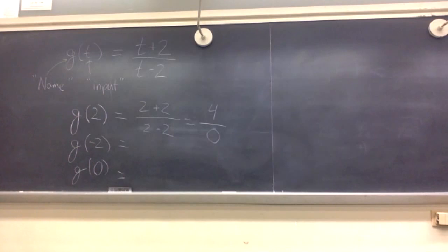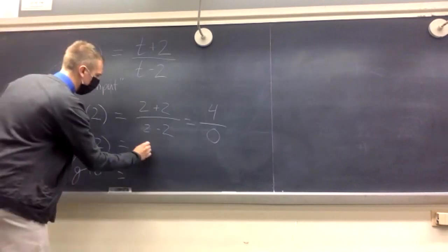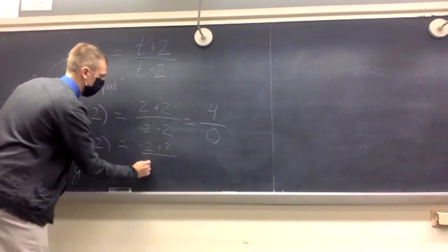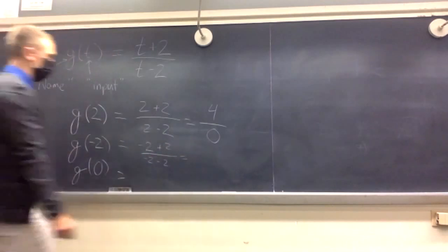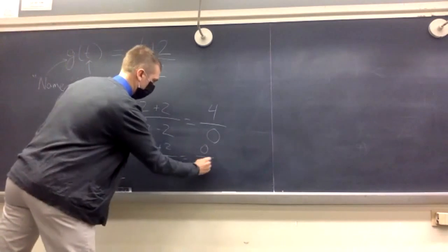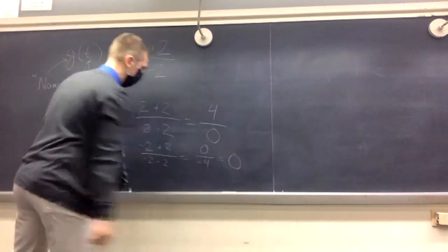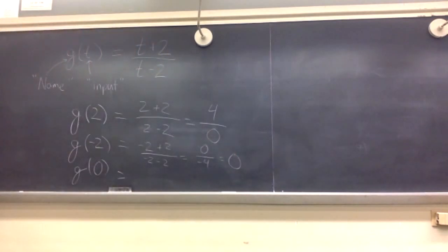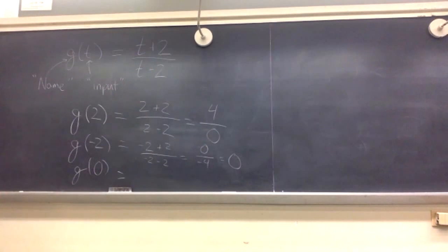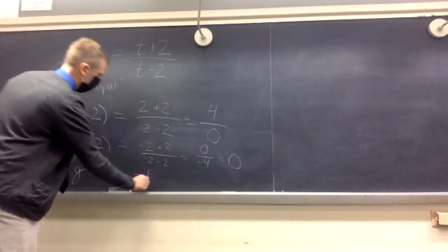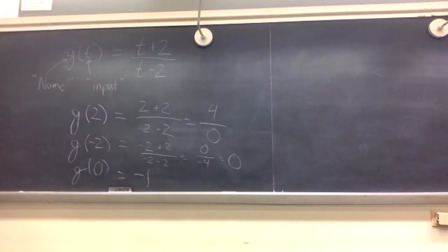g(-2): we plug in -2 for t and get (-2 + 2) over (-2 - 2), which is 0 over -4. g(0): that's (0 + 2) over (0 - 2), which is 2 over -2, which is negative 1.